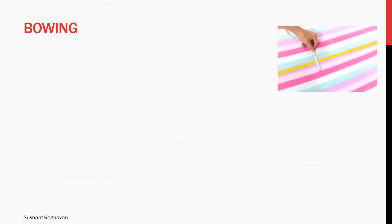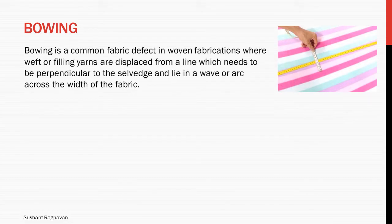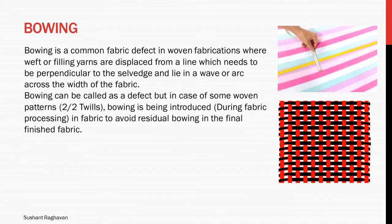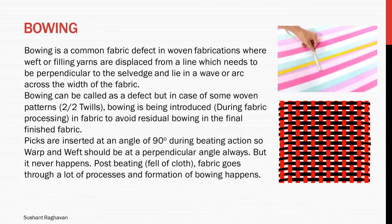Bowing is a common fabric defect in woven fabrication where weft or filling yarns are displaced from a line which needs to be perpendicular to the selvedge, and lie in a wave or arc across the width of the fabric. Picks are inserted at an angle of 90 degrees during beating action, so warp and weft should always be at a perpendicular angle.